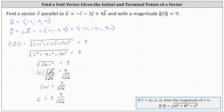If we use the positive value, vector v will point in the same direction as vector u and have a magnitude of nine. If we use a negative value of c, vector v would point in the opposite direction and have a magnitude of nine. In either case, both vectors would be parallel to vector u and have a magnitude of nine. Let's go ahead and use the positive value of c, letting c equal nine divided by the square root of 26.